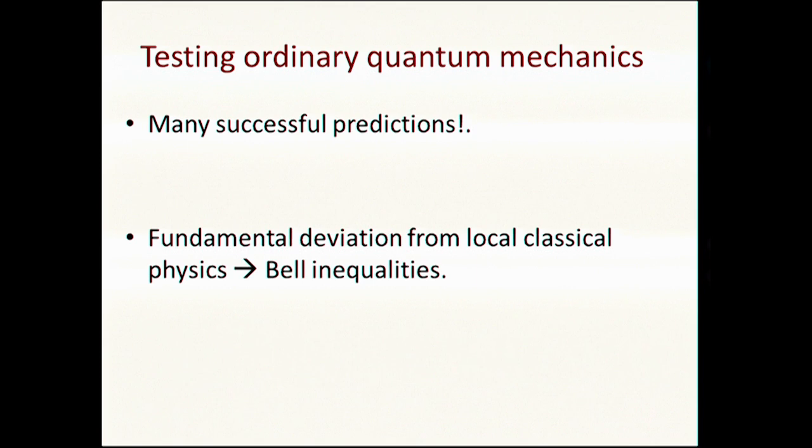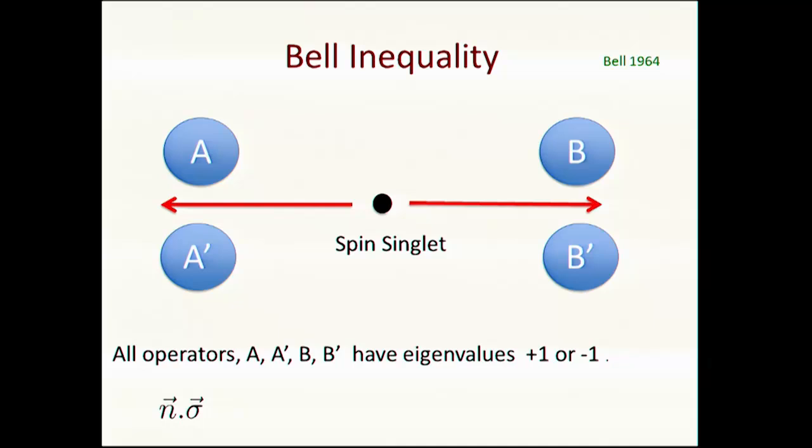In ordinary quantum mechanics, we can test quantum mechanics by testing many of its successful predictions, like energy levels in atoms, g minus 2, et cetera. But the test that tells us that there is a fundamental deviation from classical physics is the Bell inequality. Bell inequality is the test that most clearly shows you that you have something you cannot possibly reproduce using classical physics.